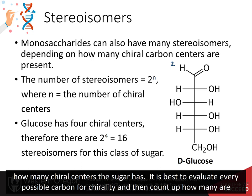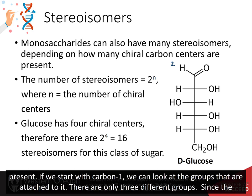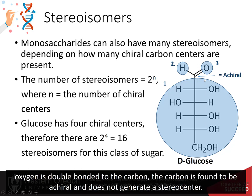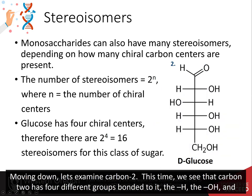It's best to evaluate every possible carbon for chirality and then count how many are chiral. Starting with carbon one, we look at the sugar groups attached to it. There are only three different groups, and since oxygen is double bonded to the carbon, carbon one is found to be achiral and does not generate a stereocenter.